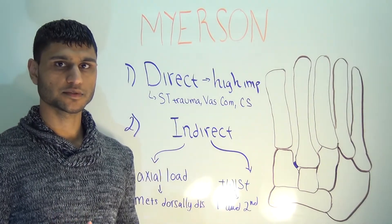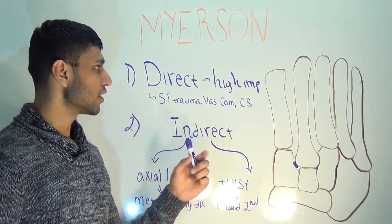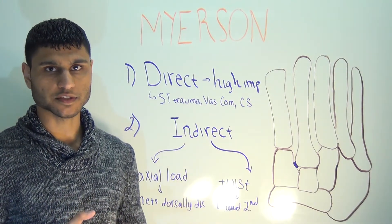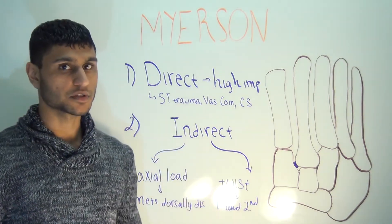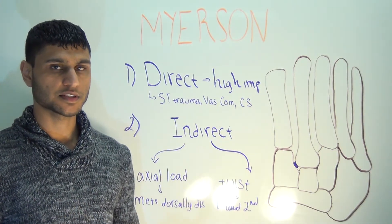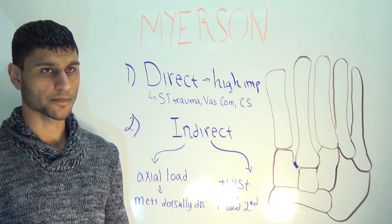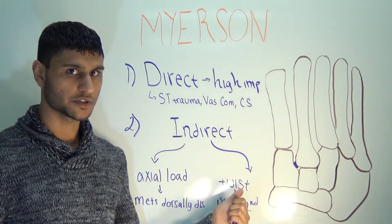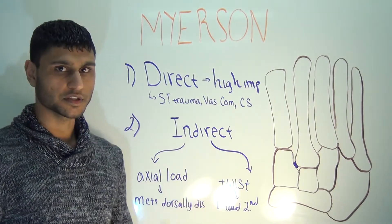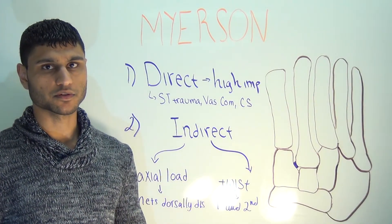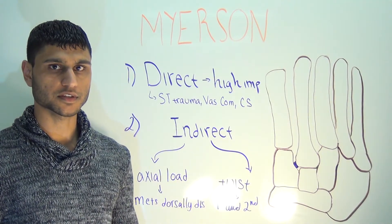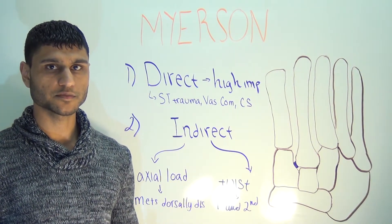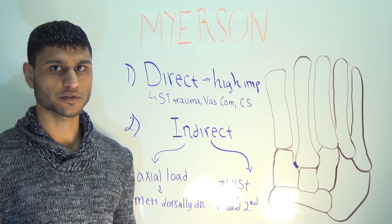There are two general mechanisms of injury. Direct injury, also known as high impact, is seen in crush injuries or motor vehicle accidents, and raises concern for vascular compromise, extensive soft tissue trauma, and compartment syndrome. In the indirect type, there are two subtypes: axial loading and twisting. In axial loading, the ankle joint and the metatarsophalangeal joints are both plantarflexed, and a vertical force is applied directly to the rear foot. That force is transmitted along the longitudinal axis of the metatarsals.